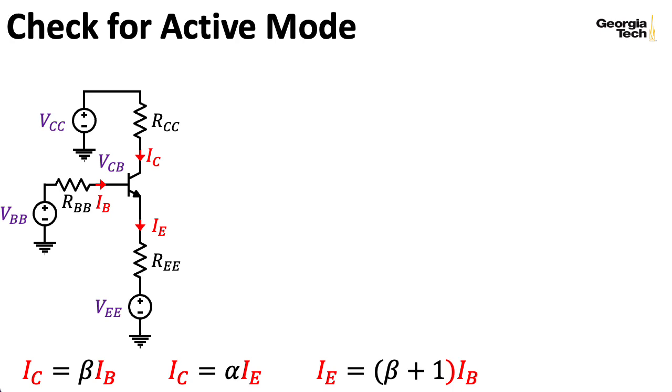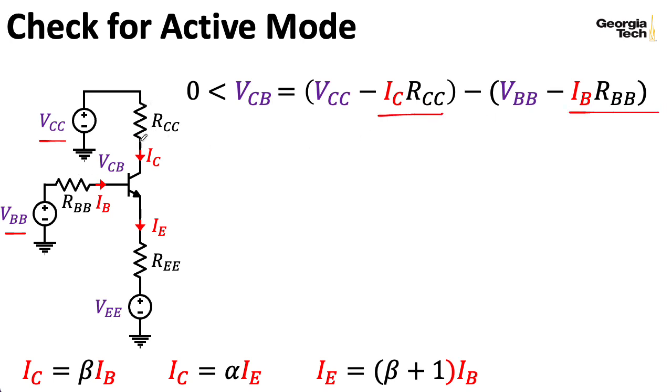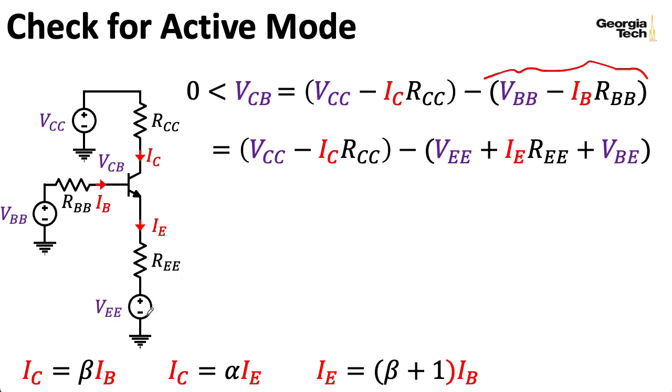Now, all of our discussion so far has assumed that the BJT is operating in the active mode. It's a good idea to check that. The general strategy for doing so using this Thevenin equivalent approach is to check to make sure that the collector to base voltage is bigger than zero. That ensures that this PN junction here is reverse biased. And to do that, we can basically take our Thevenin voltages and subtract the voltage lost across the associated Thevenin resistances. Now, depending on your circumstance, instead of computing the voltage at the base from the point of view of the Thevenin equivalent of the base, it may be easier to compute it from the point of view of the Thevenin equivalent for the emitter, where you have to remember to add in this base emitter voltage here. We've already calculated most of the quantities we would need for such a calculation, except for the Thevenin voltage and Thevenin resistance associated with looking out of the collector. So let's do that now.